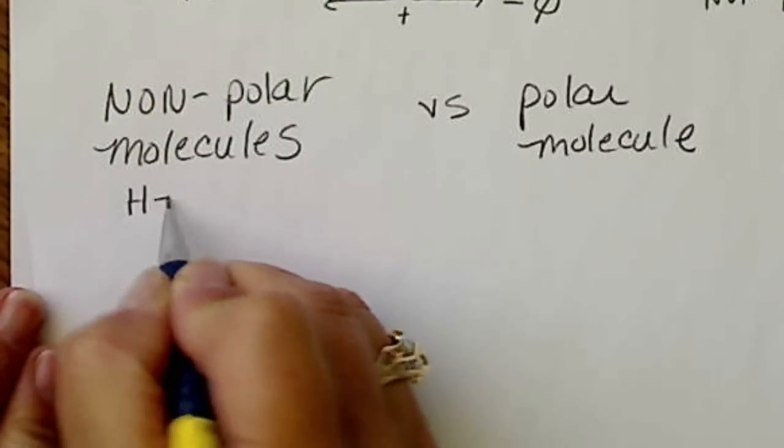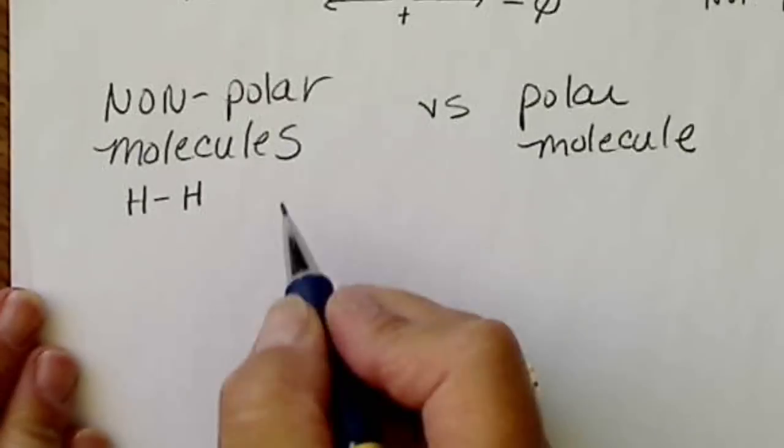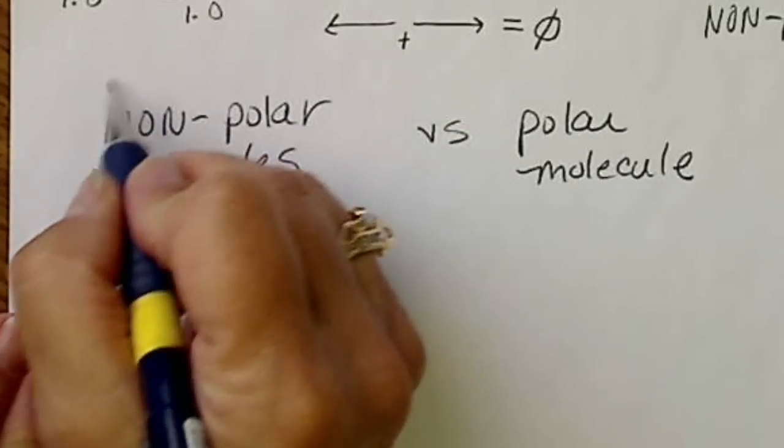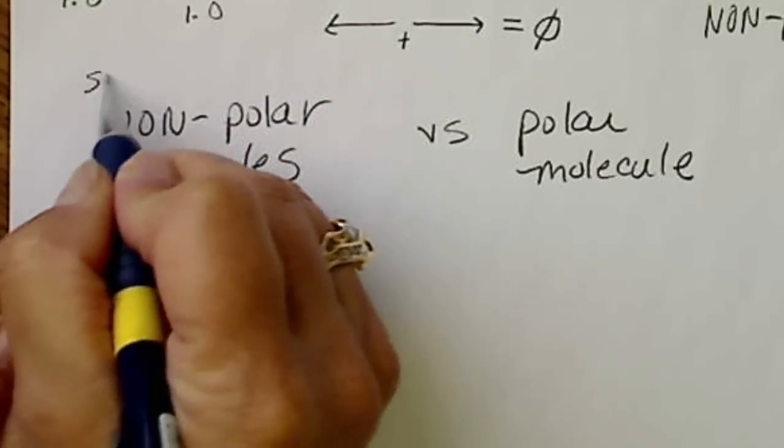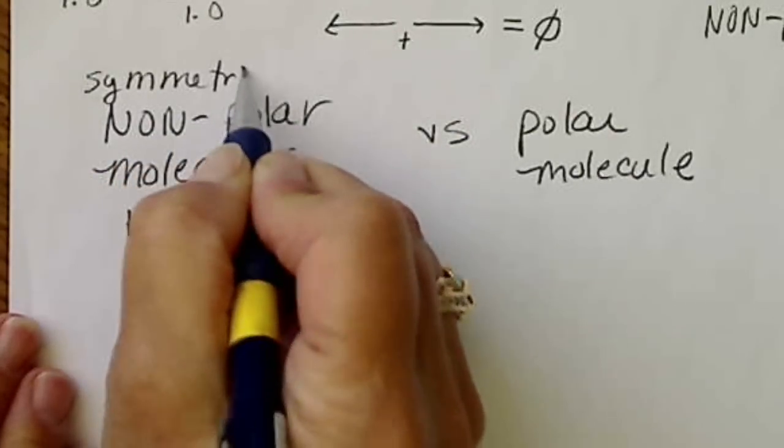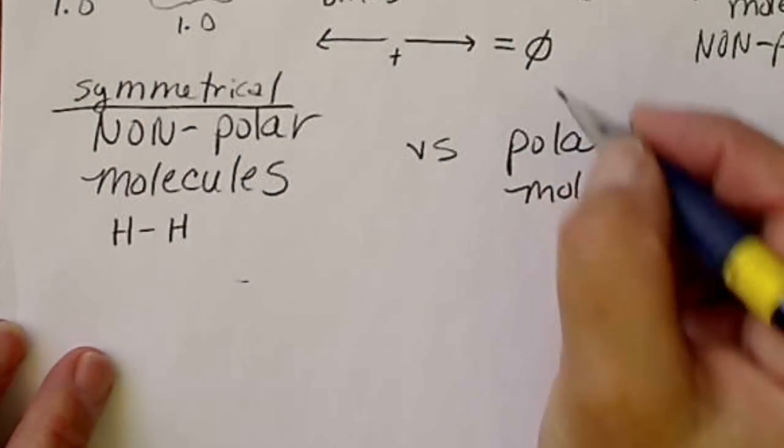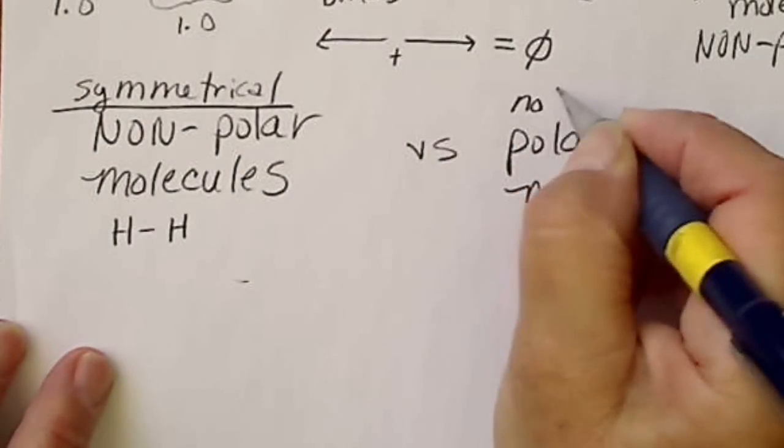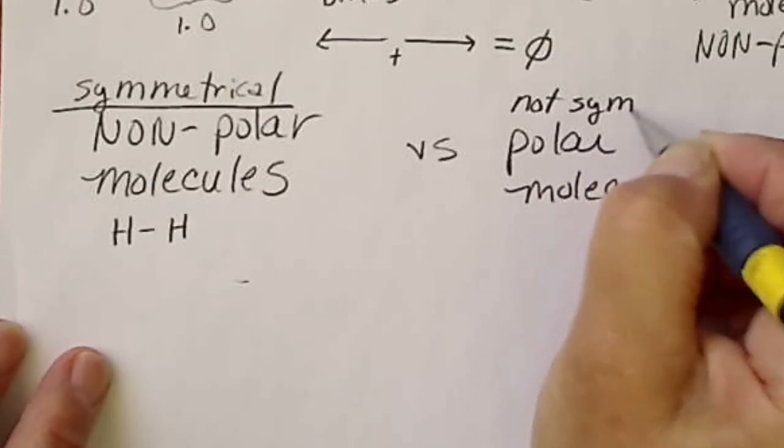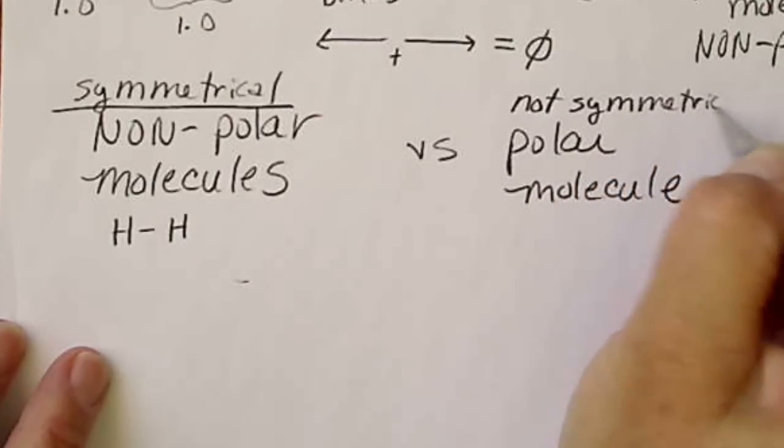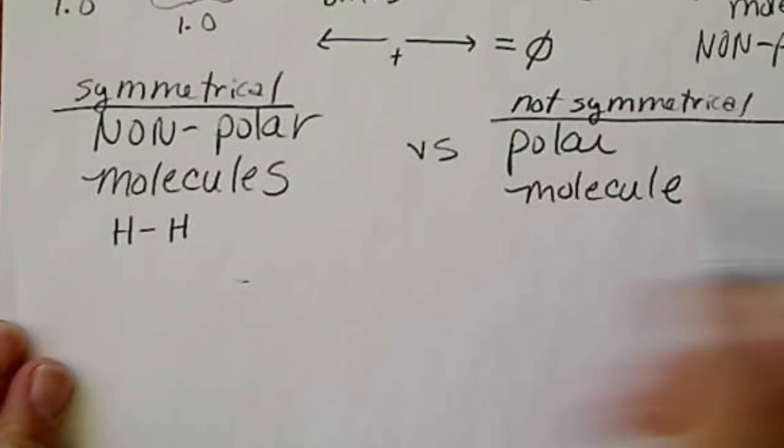Anything that's bonded to itself, for nonpolar, we're going to look and see that this entire molecule is symmetrical. In other words, it looks the same no matter how we look at it. Not symmetrical is polar.